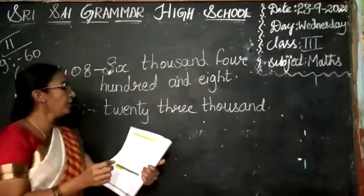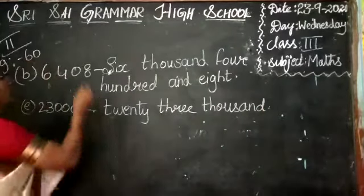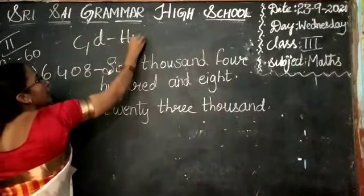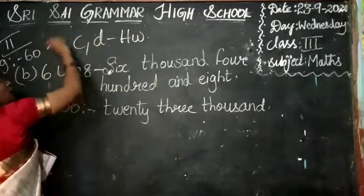Yes children, you are going to write C, D as homework. C1, D1. You do by yourself children. Okay, second bit was C, D, homework.